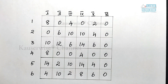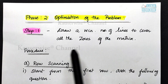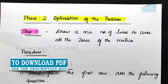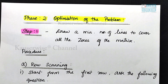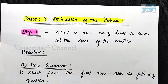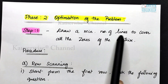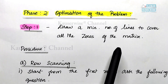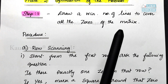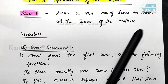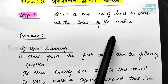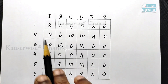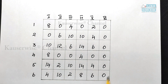Now let us see phase 2. Phase 2 is the optimization of the problem — that is, we are going to find out the optimum solution. It has 5 different steps. I will explain one by one along with the solution. The first step is: draw a minimum number of lines to cover all the zeros of the matrix. In order to apply step 1, it has 2 procedures: row scanning and column scanning. We will see how to perform row scanning and column scanning along with the problem, and we are going to draw a minimum number of lines to cover all the zeros.